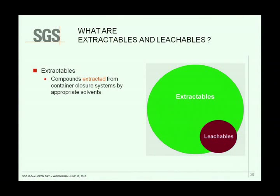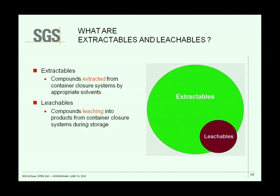So what are extractables and leachables? Extractables are compounds that can be extracted from the container closure system in which your product is sitting by appropriate solvents — not by the product itself, but by appropriate extraction solvents. And your leachables are compounds that can leach into your drug product from your container closure system during storage, over the lifetime shelf life of your product.